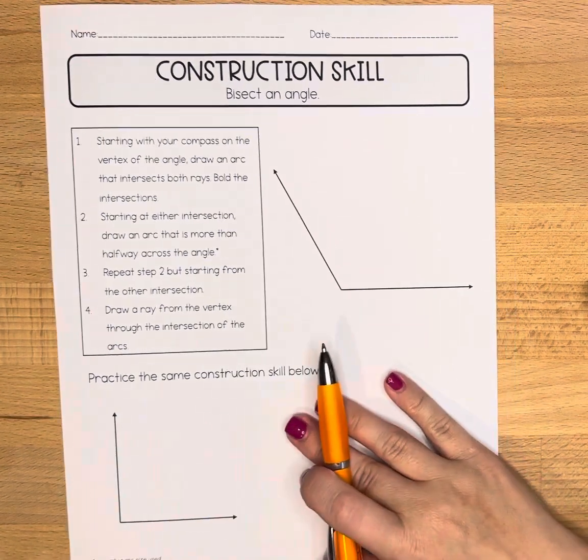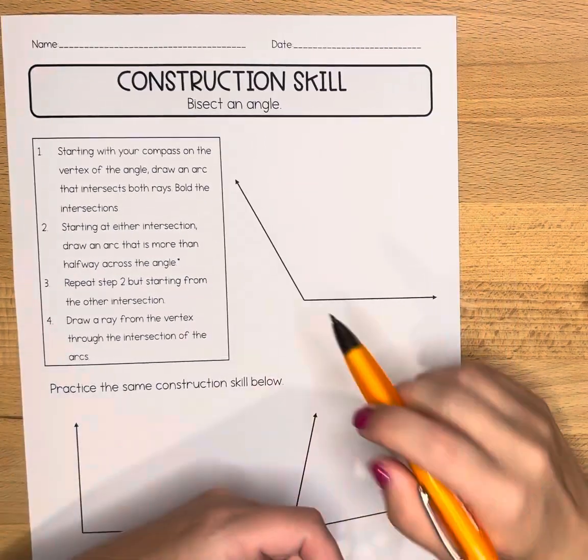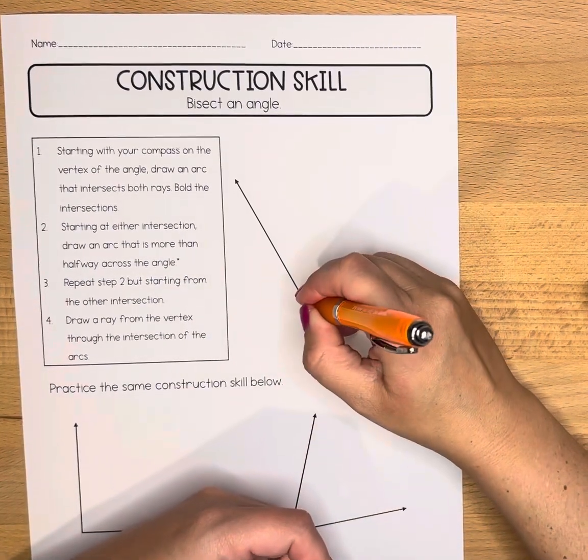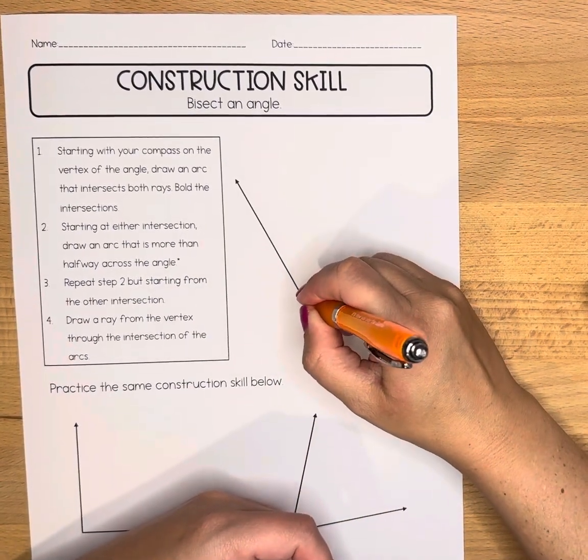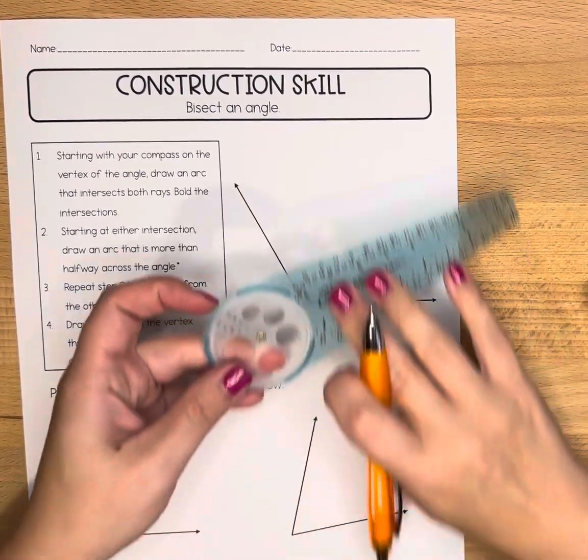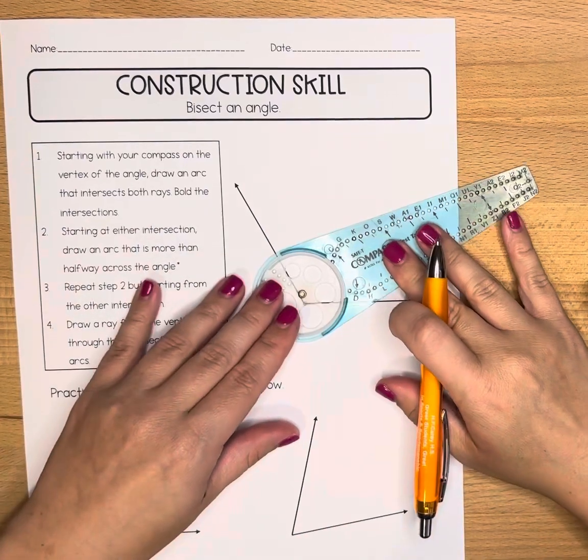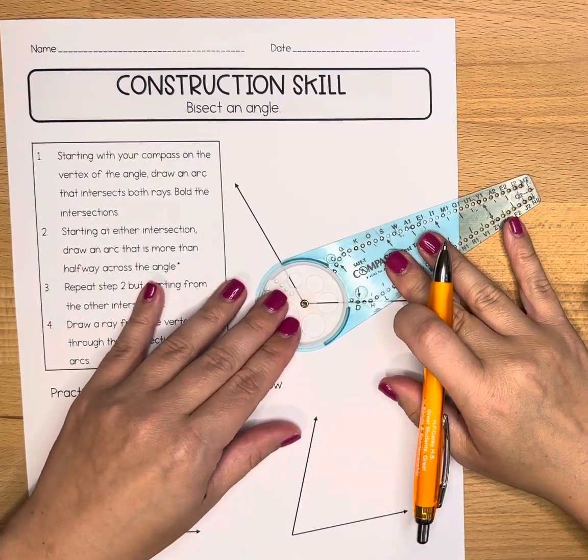We're going to start with our compass on the vertex of the angle and draw an arc that intersects both rays.